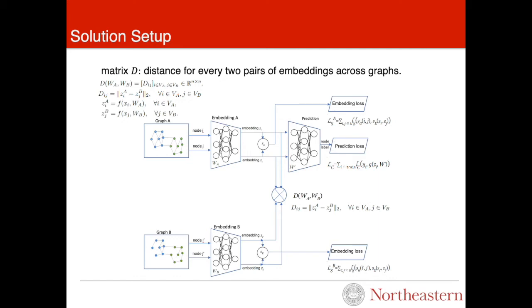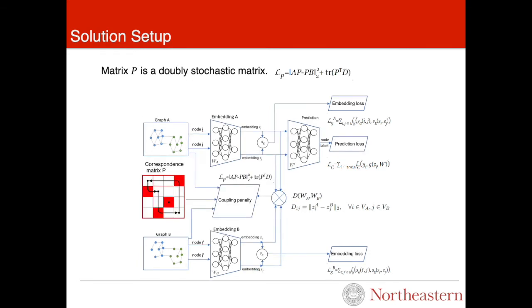For this purpose, we first compute pairwise distance for every two pairs of embeddings across graphs in matrix B. We take all possible pairwise embeddings and compute the distance between them. We have a doubly stochastic matrix P that couples the nodes of the two graphs and their embeddings together through the penalty. This penalty function enforces the nodes that are structurally similar across graphs to receive proximal embeddings. This coupling penalty is convex.